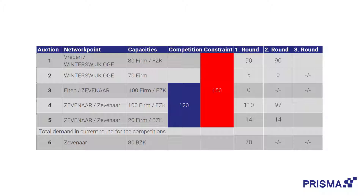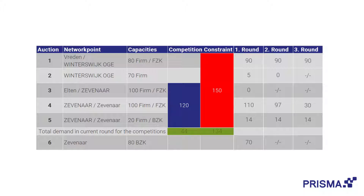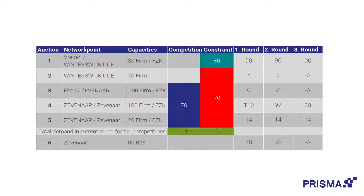The demand for auctions 1 and 5 is unchanged at 90 and 14, while the demand for auction 4 reduces to 30. Due to the over-demand in auction 1 and the reduced demand in the remaining two auctions, the platform decides to prefer auction 1 over the other two during the partial allocation of the constraint. In practice, this means auction 1 will get the full 80 capacity of the available 150, and auctions 4 and 5 will have to share and compete for the remaining 70. Therefore, auction 1 continues with large price steps, and auctions 4 and 5 try to reach the competition constraint of 70 with small price steps.